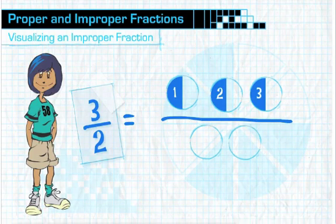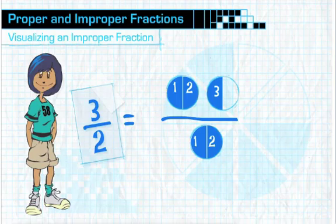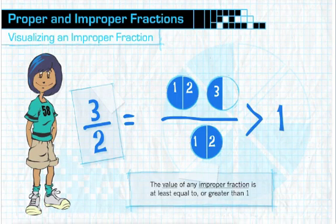Three halves, or three over two. And what conclusion can we draw about this improper fraction? Because its numerator is larger than its denominator, it has a value larger than one.